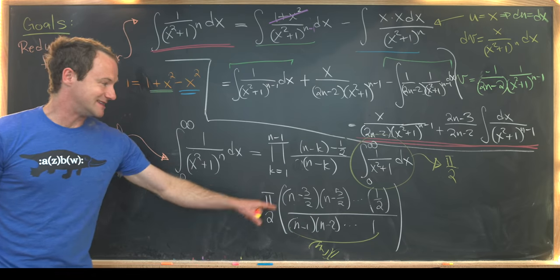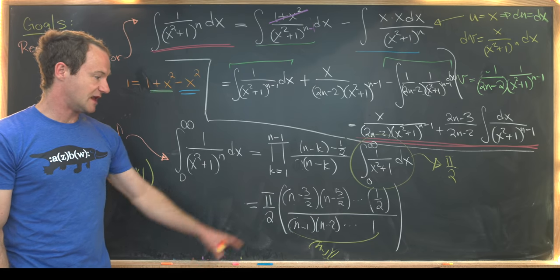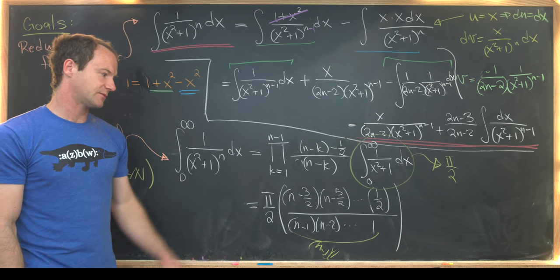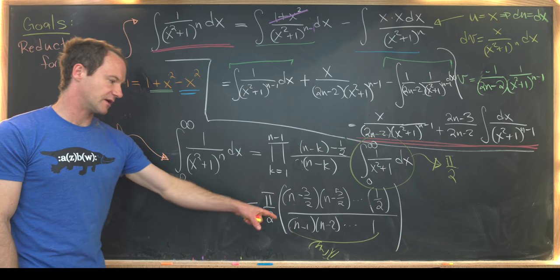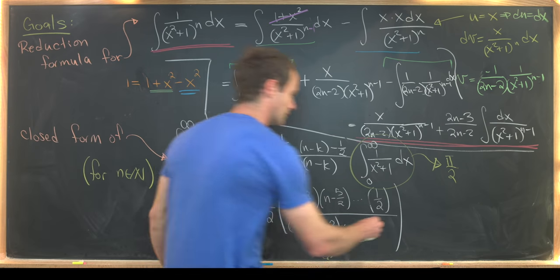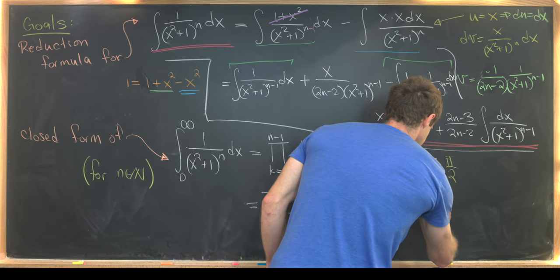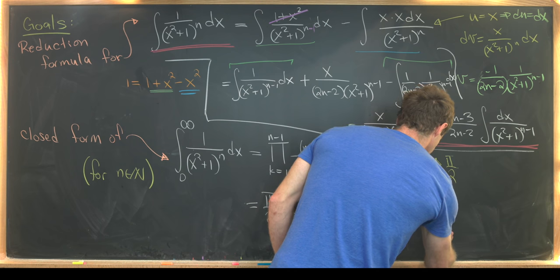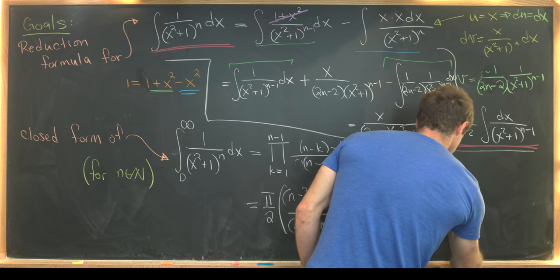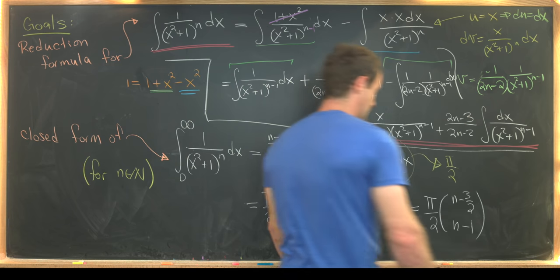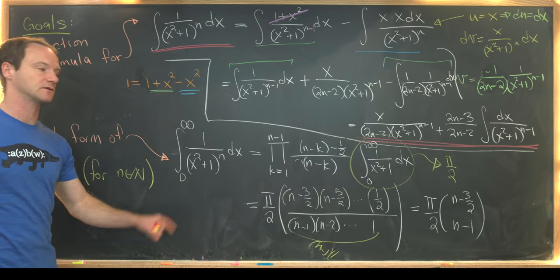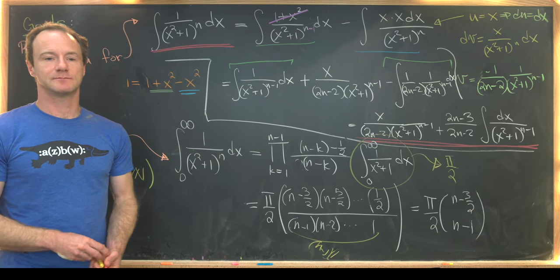We have a descending product of n minus 1 terms in the numerator and n minus 1 factorial in the denominator — that's exactly a binomial coefficient. So this leaves us with pi over 2 times n minus 3 halves choose n minus 1. That's a nice closed form for this integral, and that's a good place to stop.